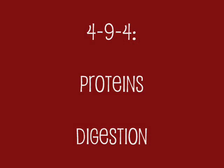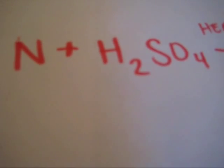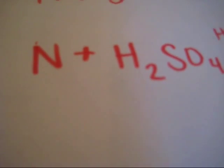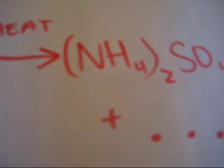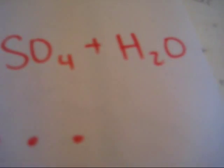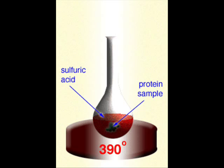The Kjeldahl method can be divided into three parts: digestion, distillation, and titration. In digestion, nitrogen-containing food is boiled with sulfuric acid to make ammonium sulfate, water, and other diet byproducts depending on the food that was boiled. In this picture, the protein sample is heated at a high temperature with sulfuric acid.